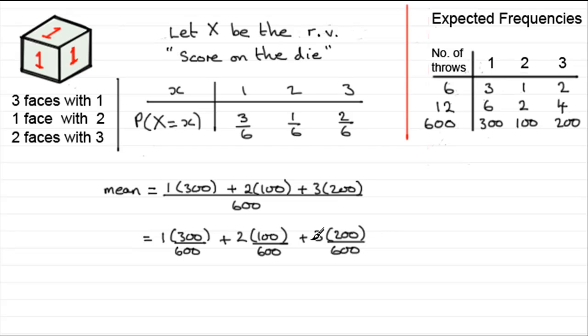Now look what happens. I could simplify this. I could divide 300 and 600, this fraction, by 100, top and bottom by 100. So that would cancel out those two zeros and those two zeros there. So I'd have 1 times 3 over 6. Similarly, I could do it here. 100, 600 gives me 1 over 6. And here, this would be 2 over 6. Let's just write that down again. What we've got is 1 times 3 over 6 plus 2 times 1 over 6 plus 3 times 2 over 6.